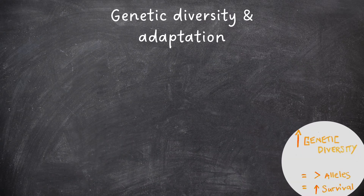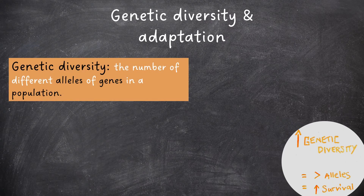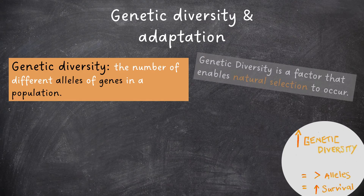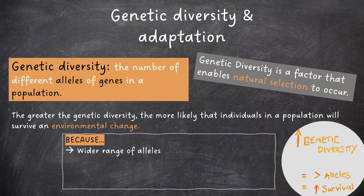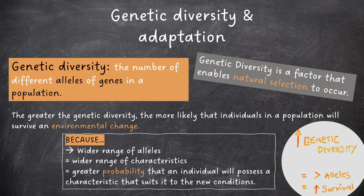Let's make a start by defining genetic diversity. Genetic diversity is the number of different alleles of genes in a population. Genetic diversity is a factor that enables natural selection to occur. The greater the genetic diversity, the more likely that individuals in a population will survive an environmental change. This is because there is a wider range of alleles, meaning that there are a wider range of characteristics. Therefore, there is a greater probability that one individual will possess a characteristic that suits it to the new conditions.